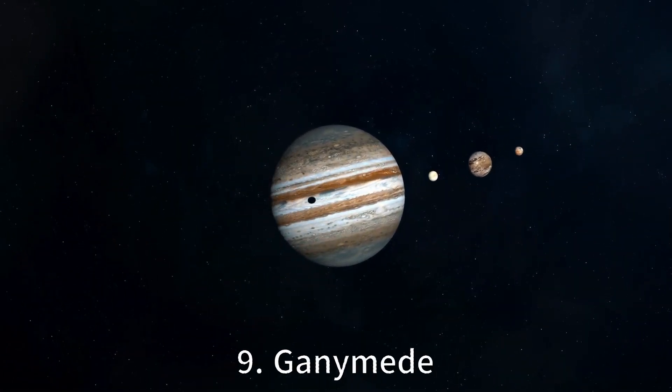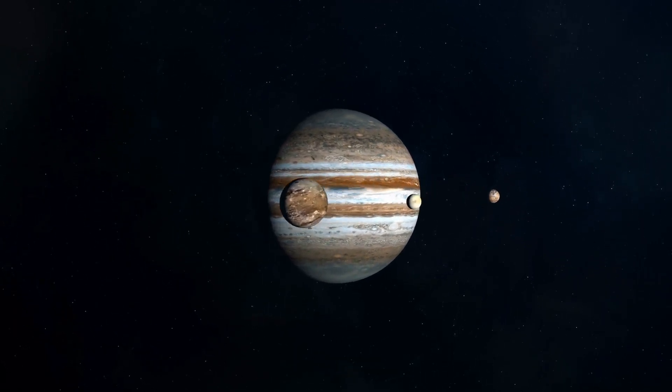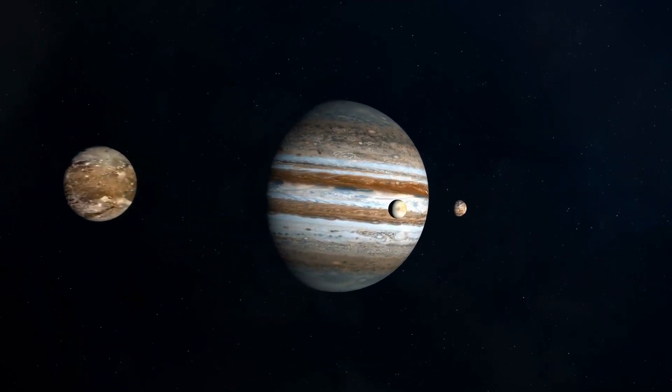The largest moon in the solar system is Ganymede, which orbits Jupiter. It is larger than the planet Mercury and is the only moon known to have its own magnetic field.